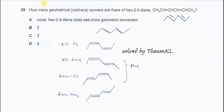Question 29. How many geometrical isomers are there in hex-2,4-diene? So this is the hex-2,4-diene structure. To answer this question, it's better to use the skeleton formula so you can see the structure clearly.